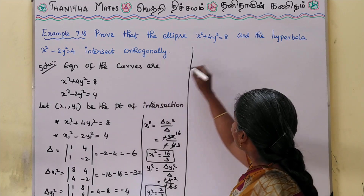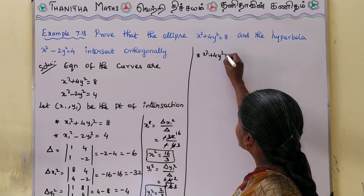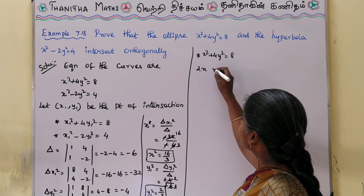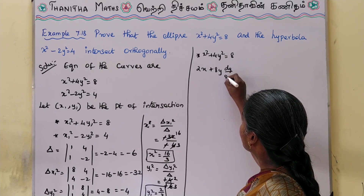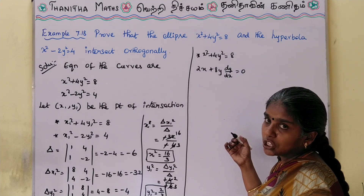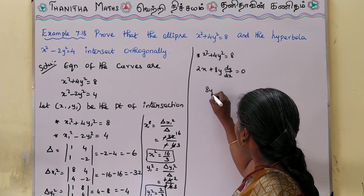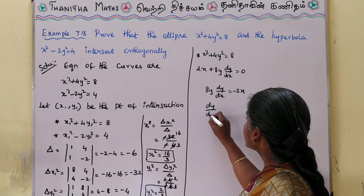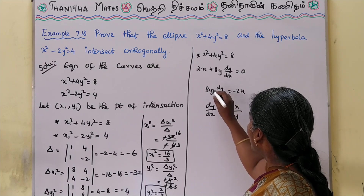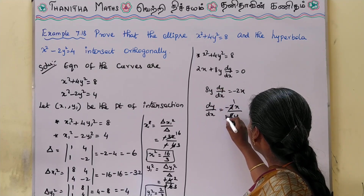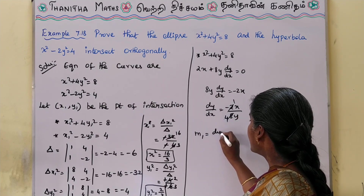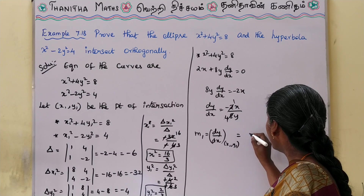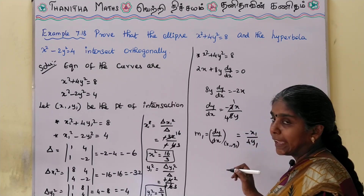Now we find the slope from the first equation: x² + 4y² = 8. Differentiating: 2x + 8y(dy/dx) = 0, so 8y(dy/dx) = -2x, giving dy/dx = -2x / 8y = -x / 4y. Therefore m1 = dy/dx at (x1, y1) is equal to -x1 / 4y1.